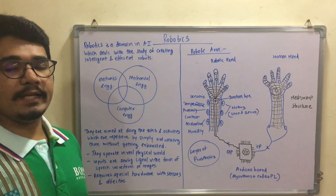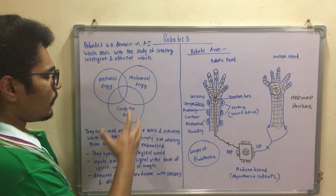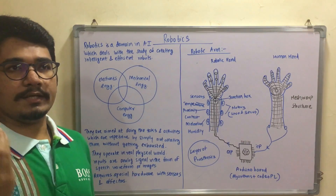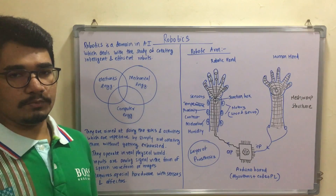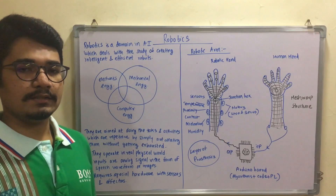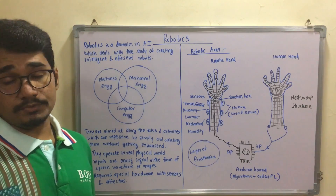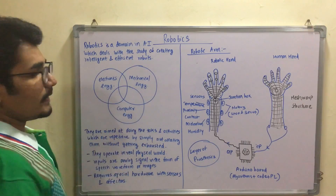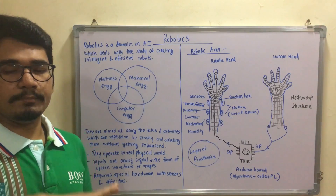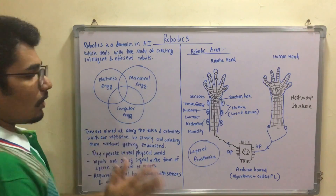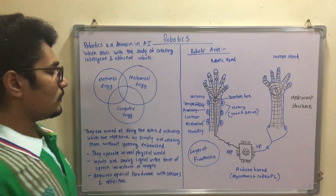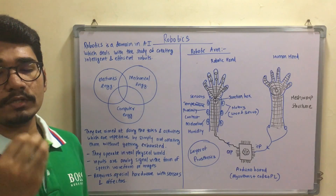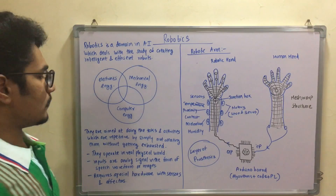Robotics is used in a large number of fields — industries, factories, medical applications, defense, learning purposes, and many more. Many different types of robots exist across many different fields. All of this depends upon the application — what robot you are going to prepare or configure.